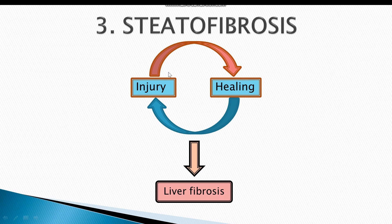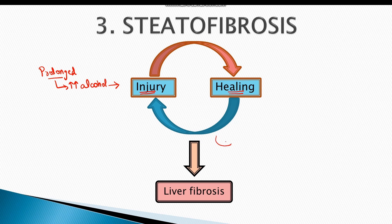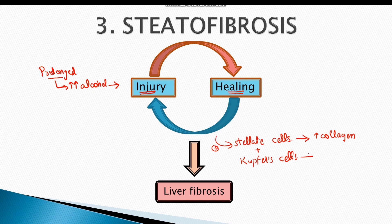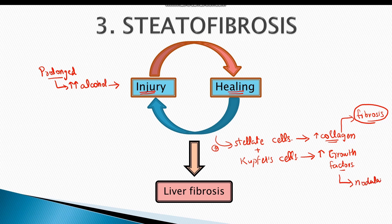The third and final step in alcoholic liver disease is steatofibrosis. For a prolonged period of time, excessive consumption of alcohol results in a cycle of injury and healing. Alcohol causes injury to hepatocytes, which then heal, and as a result there is a continuous cycle of injury and healing. In a chronic disease, injury and healing are going on hand in hand, resulting in activation of stellate cells and Kupffer cells. Stellate cells result in increased collagen deposition inside the liver tissue, and Kupffer cells result in increased release of growth factors. Excessive collagen deposition results in fibrosis, and increased growth factors result in nodularity of the liver, hence the disease progresses to steatofibrosis.